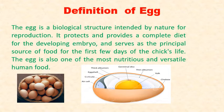The egg is a biological structure intended by nature for reproduction. It protects and provides a complete diet for the developing embryo, and serves as the principal source of food for the first few days of the chick's life. The egg is also one of the most nutritious and versatile human foods.